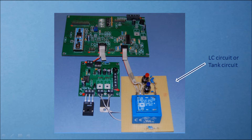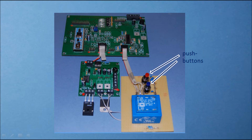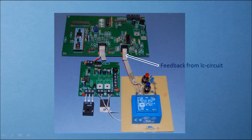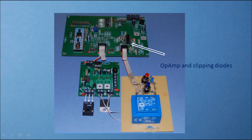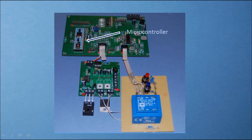This circuit is called an LC circuit or a tank circuit. There are two push buttons — a red one and a blue one — which enable or disable parts of the capacitor. The feedback signal from this LC circuit is fed back into the pulse generator, amplified by an operational amplifier and clipping diodes to reach the levels that can be fed into the microcontroller.